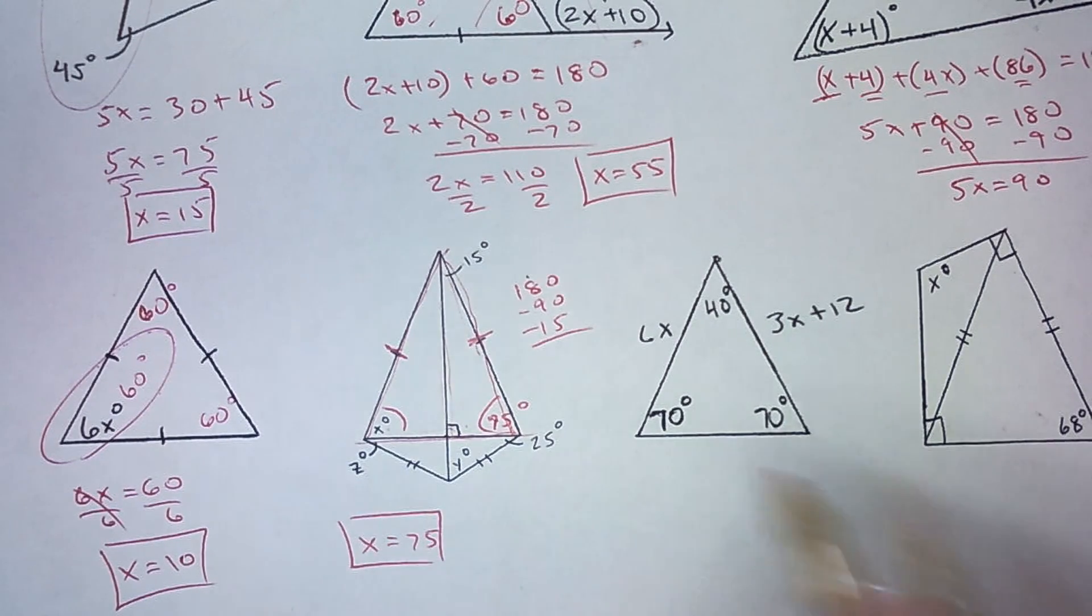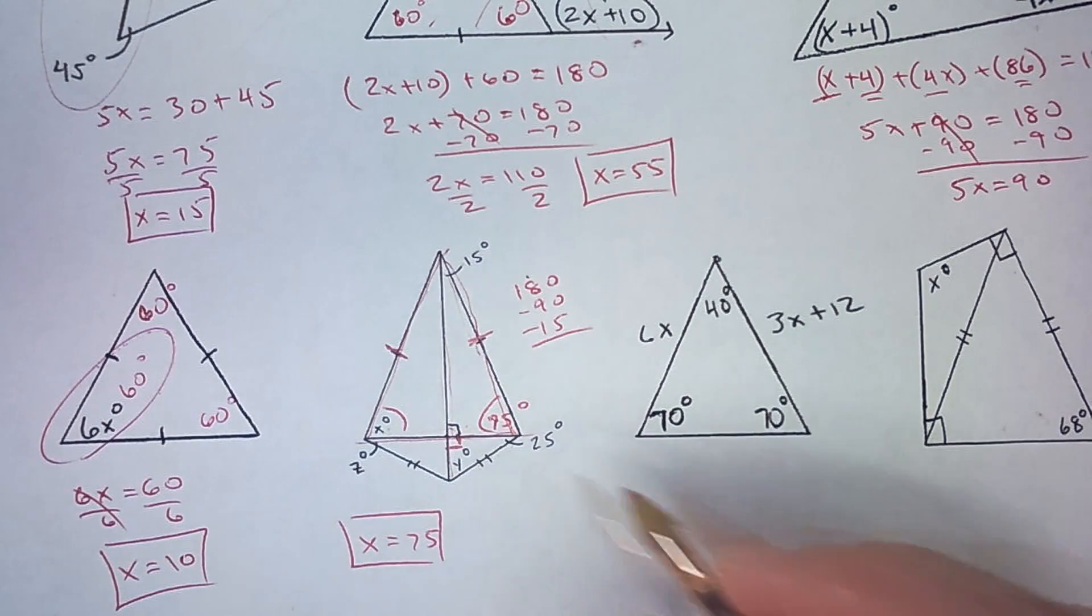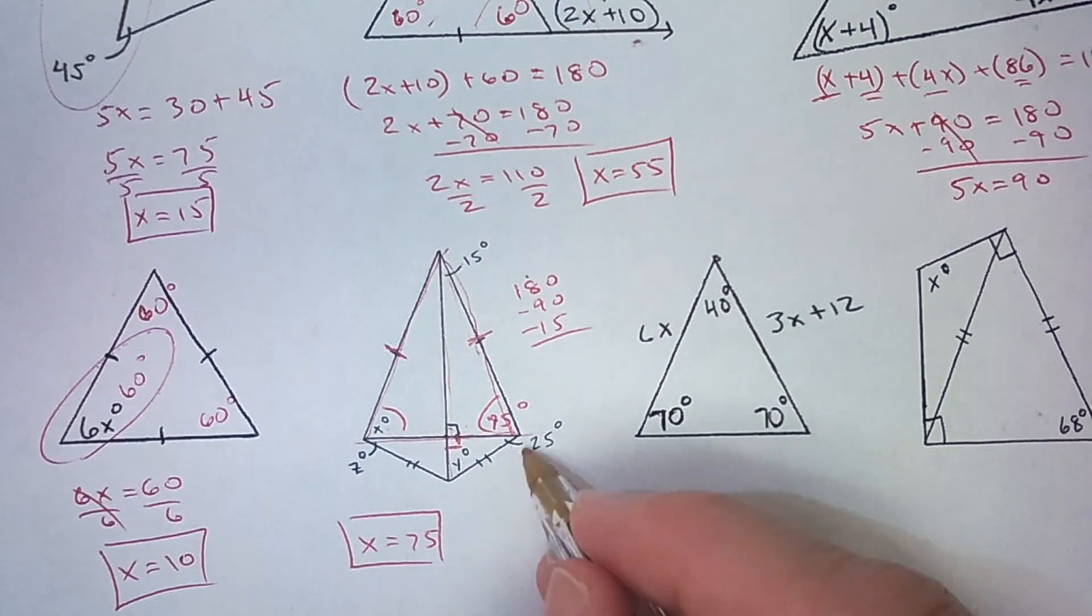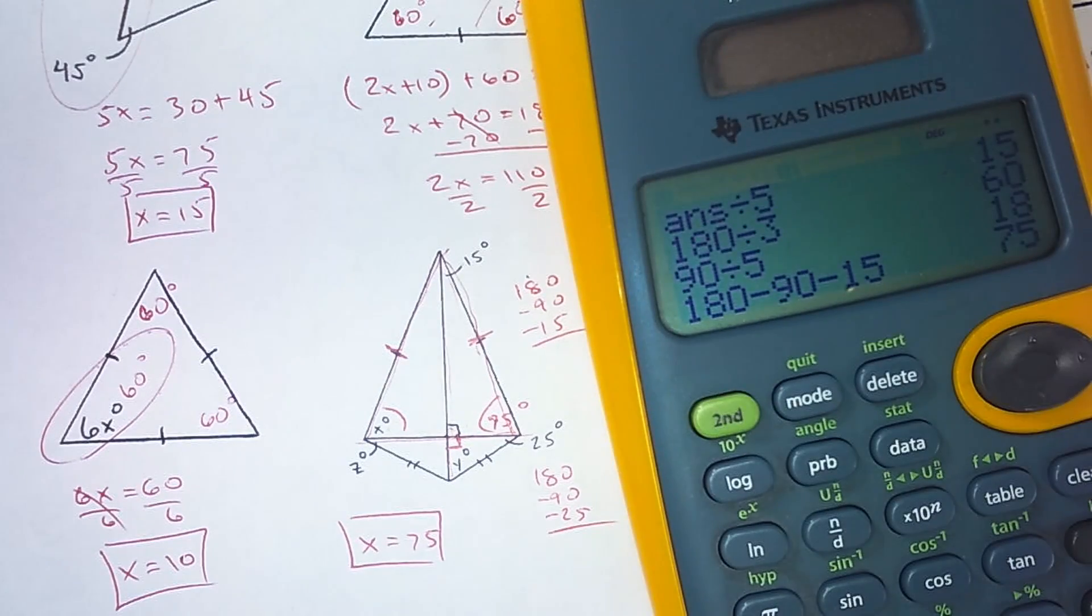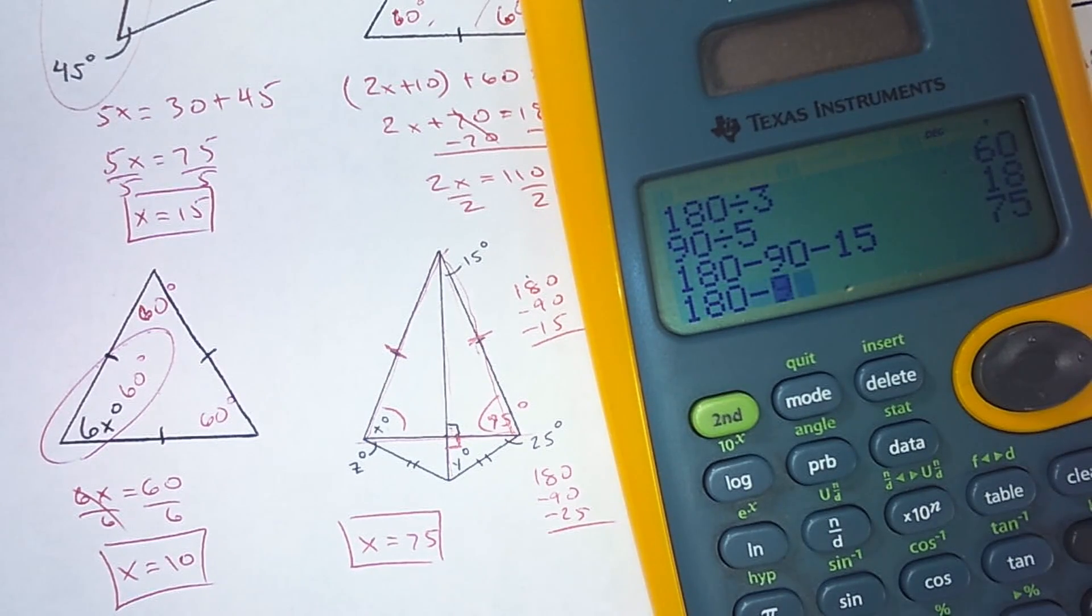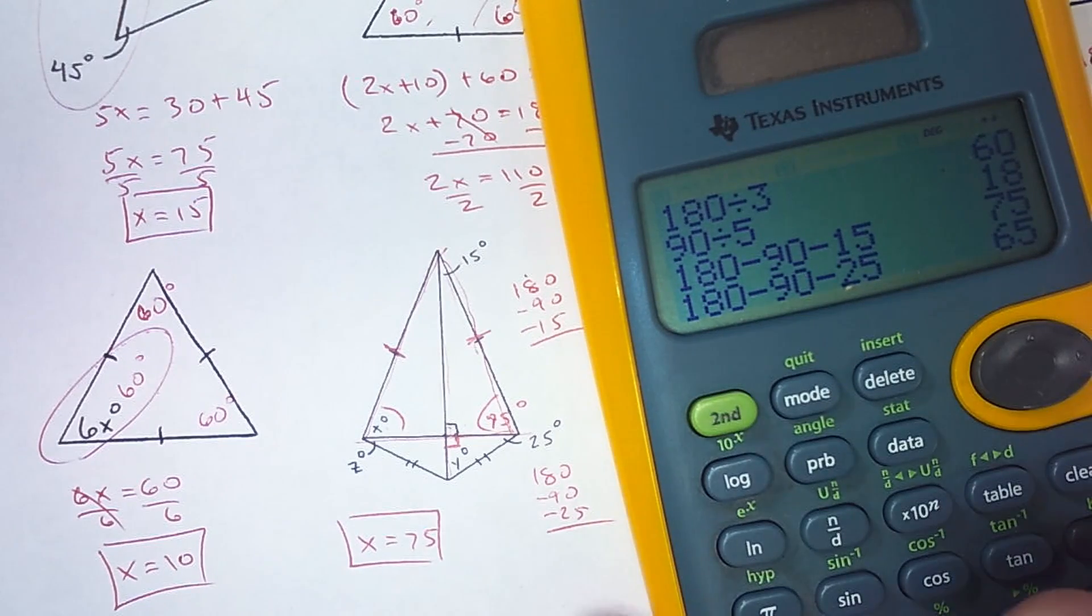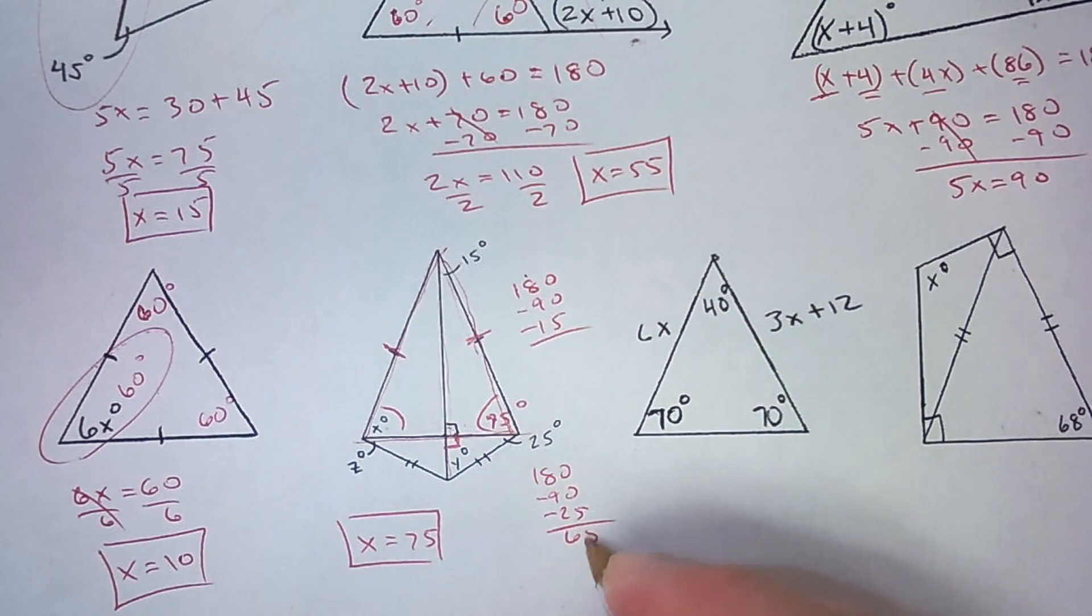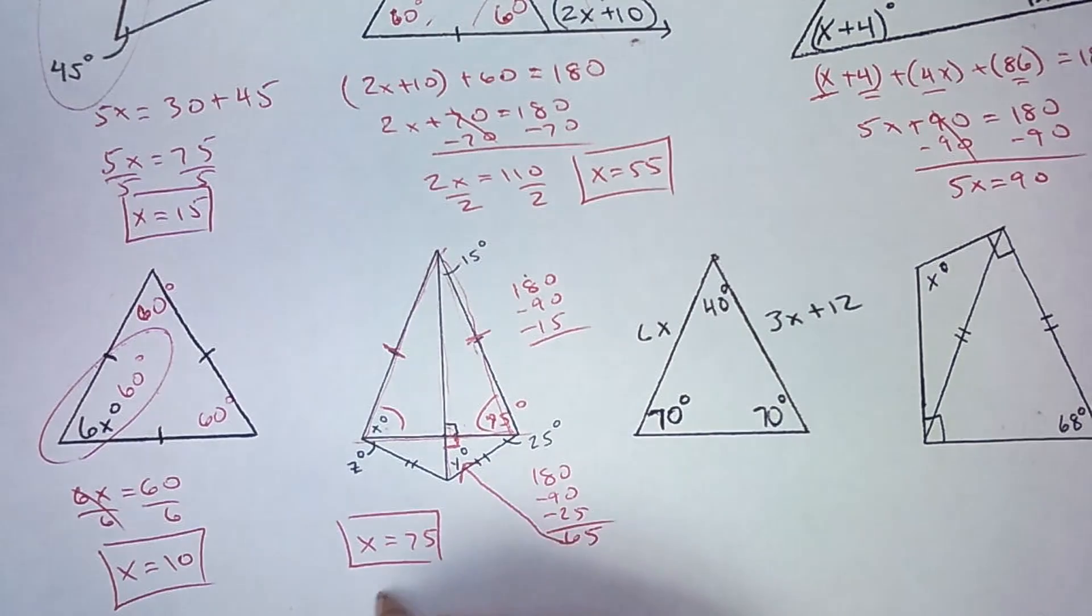Now down here, I've got another little right triangle. There's a right angle right here. And I can take away the 90 and the 25 from 180. 180 minus 90 minus 25. And that is 65. So that tells me right here is a 65 degree angle. So y is 65.